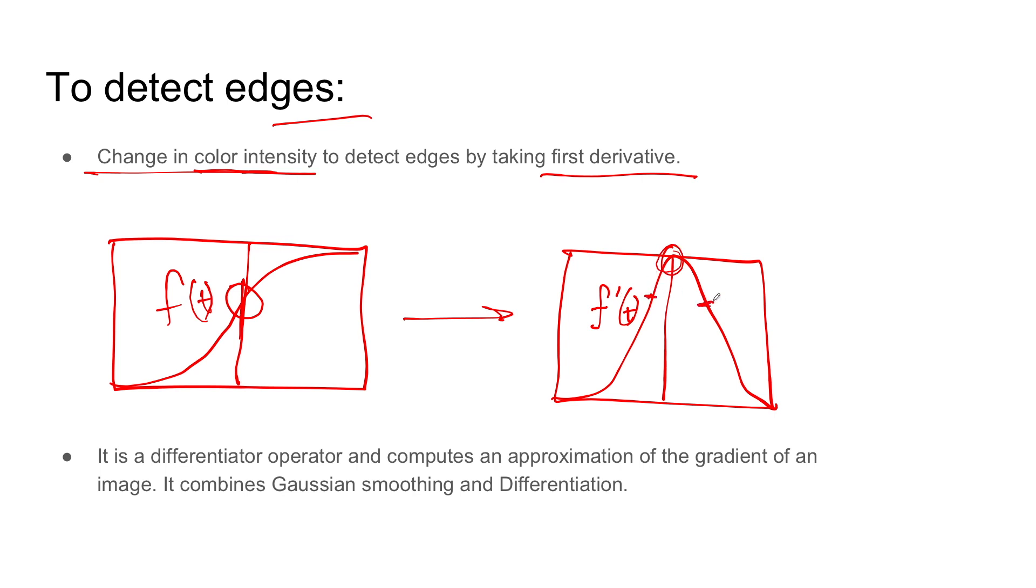So to frame it in words, this is a differentiator operator and computes an approximation of the gradient of an image. It combines Gaussian smoothing and differentiation.